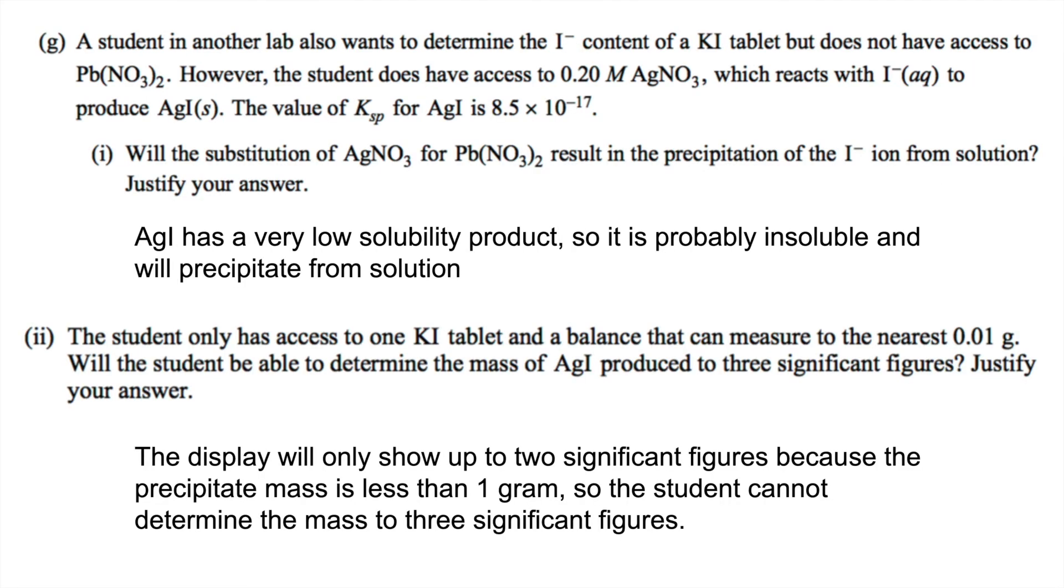G says, a student in another lab wants to determine the I- content of a KI tablet, but does not have access to the lead-to-nitrate. However, he does have access to silver nitrate, which reacts with iodide to produce silver iodide. The value for Ksp of silver iodide is 8.5 times 10 to the negative 17.